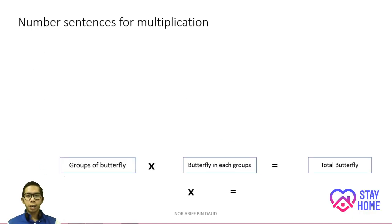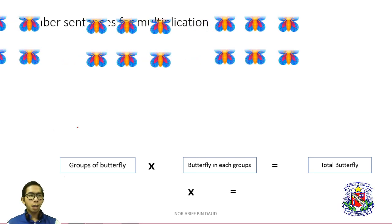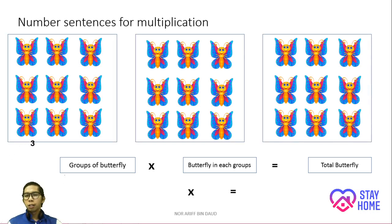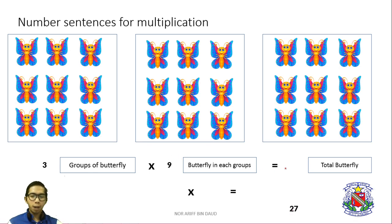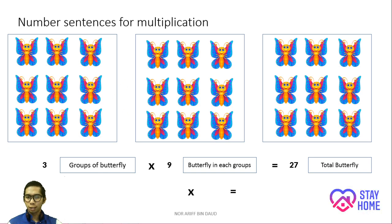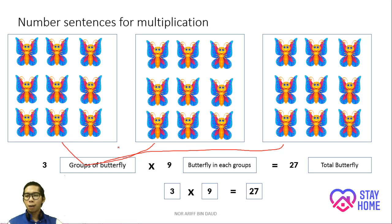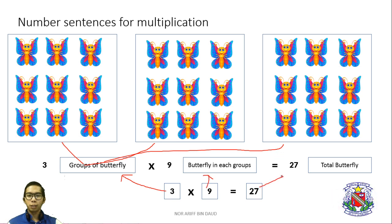Next slide I have a butterfly. We have 1, 2, 3, 4, 5, 6, 7, 8, 9 — we have 9 butterflies in each group. So we have 3 groups of butterflies and 9 butterflies in each group, and we have 27 butterflies here all together. The answer will be 3 times 9 equals 27. 3 stands for the groups, 9 stands for 9 butterflies in each group, and 27 is the total.